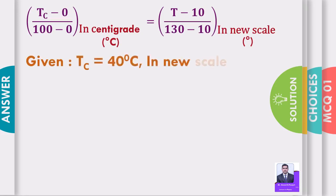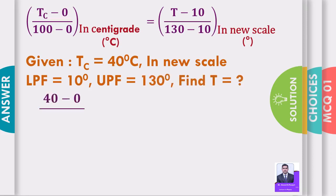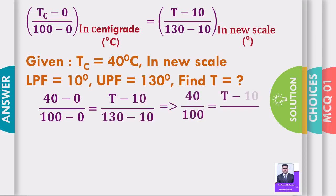Given Tc is equal to 40 degree Celsius in new scale. LPF 10 degree Celsius, UPF 130 degree, find T is equal to how much? 40 minus 0 divided by 100 minus 0 is equal to T minus 10 divided by 130 minus 10. That implies 40 by 100 is equal to T minus 10 divided by 120.